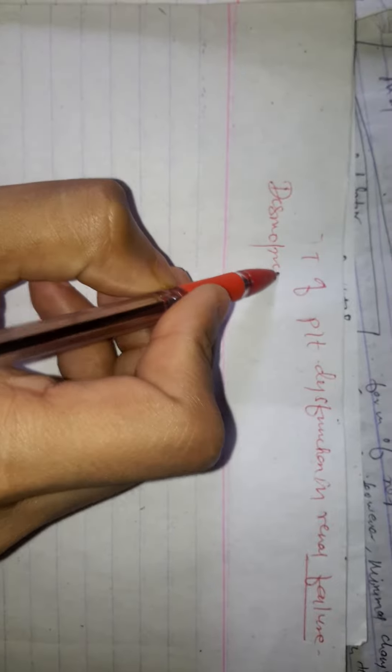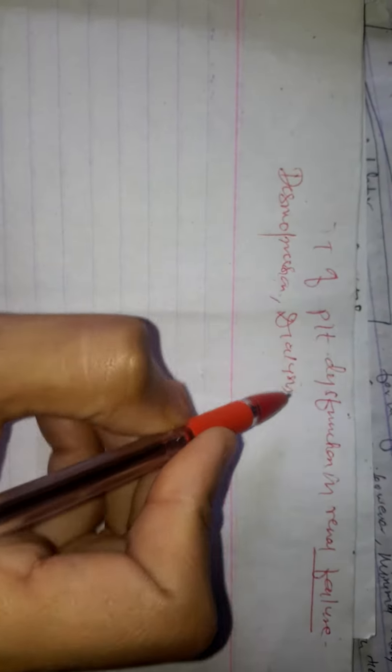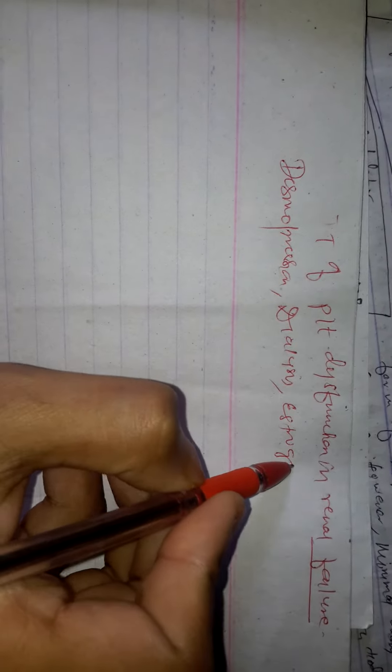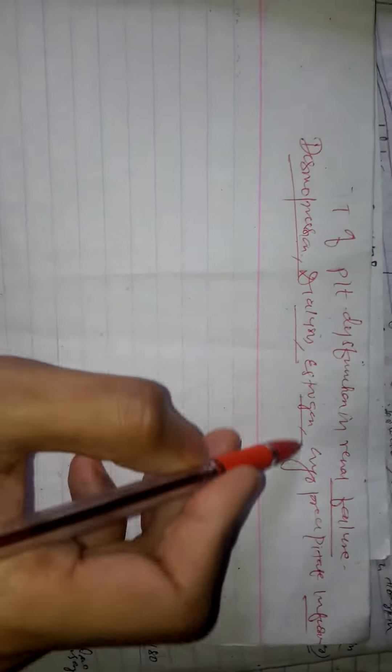What are the options available to correct it? Desmopressin, dialysis, estrogen, and cryoprecipitate infusion. These four things we can do for correction of bleeding in patients with platelet dysfunction.